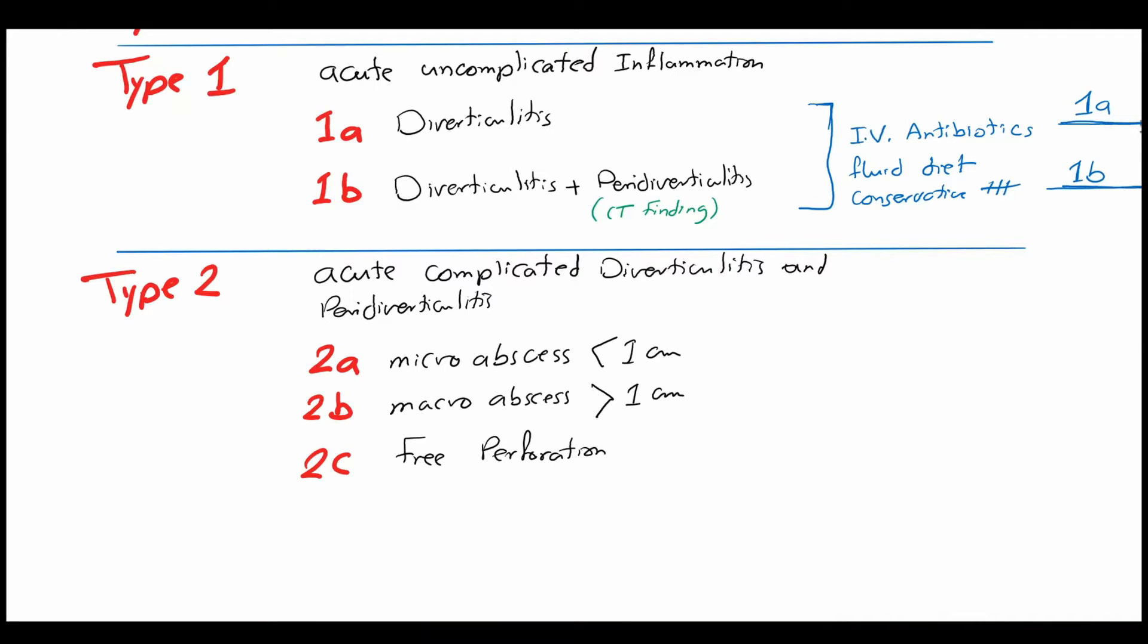2c is further divided into 2c1, purulent perforation, and 2c2, fecal perforation.